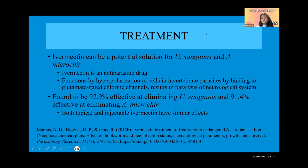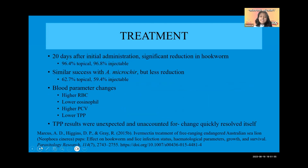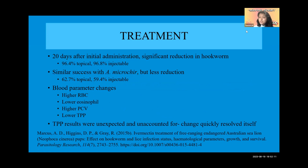Twenty days after initial administration, significant reduction in hookworm was found — a 96.4% decrease with topical ivermectin and a 96.8% decrease with injectable ivermectin. There was similar success with A. microchir, but with slightly less reduction: 62.7% with topical ivermectin and 59.4% with injectable ivermectin.